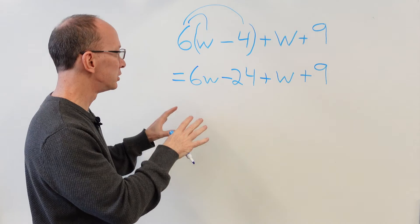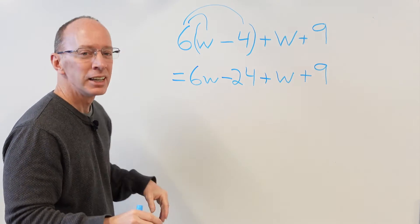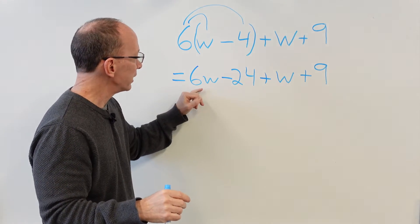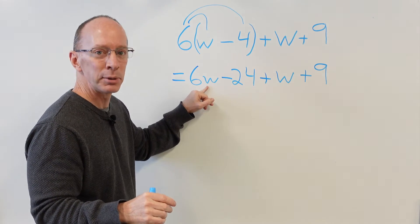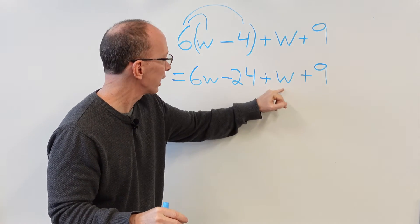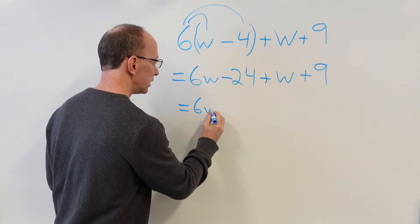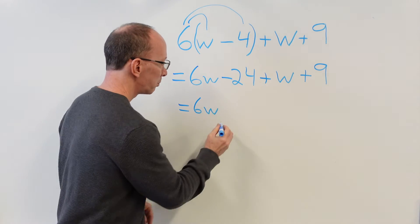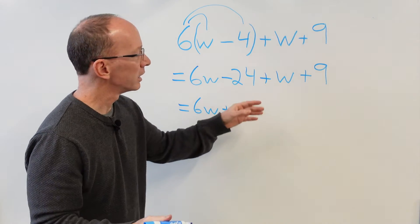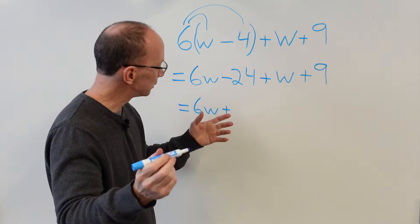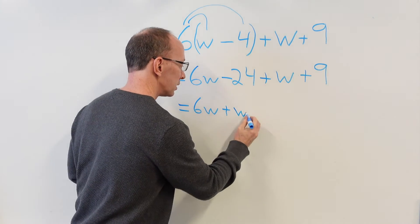Now what we want to do is look for terms to combine. Basically, you look for his cousin. Anybody has a w on the end of it? Or a w? We got one right there. So 6w plus, if you want to you can put the one there, doesn't matter, plus w.